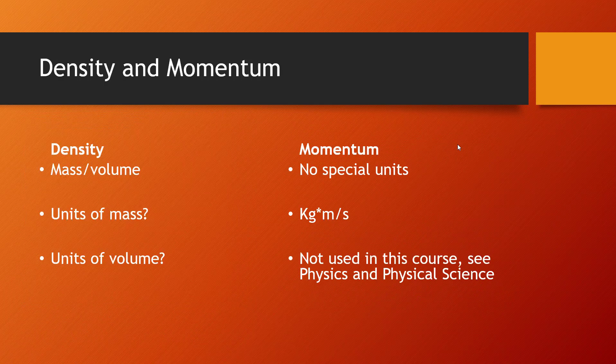Density is how much mass is packed in a given unit of volume. Mass can be measured in grams and volume can be measured in cubic centimeters, so we measure density as grams per cubic centimeter. Momentum doesn't have special units and is measured as kilograms per meters per second, but that's not really going to be used in this course — you're thinking physics and physical science.